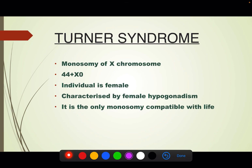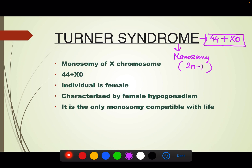So what is Turner's syndrome? Turner's syndrome is an example of monosomy — that is, one chromosome is missing. It is 2n-1. Which chromosome is missing? One sex chromosome is missing. So basically, Turner's syndrome is 44 autosomes and one X chromosome, with the other sex chromosome missing. So it is 44 plus X0 — monosomy of the X chromosome. The individual is 44 plus X0 and is female, because it has no Y chromosome.